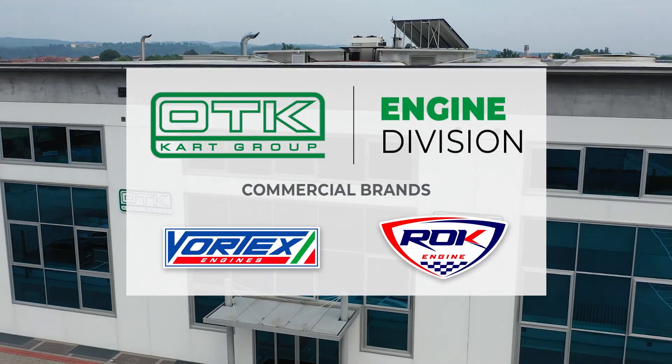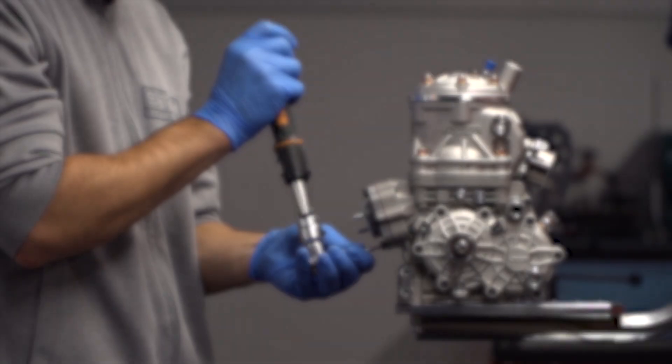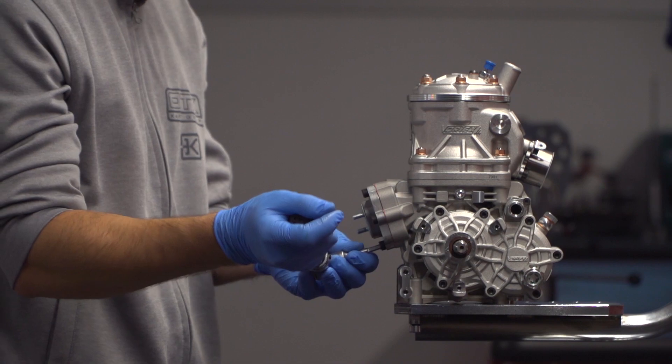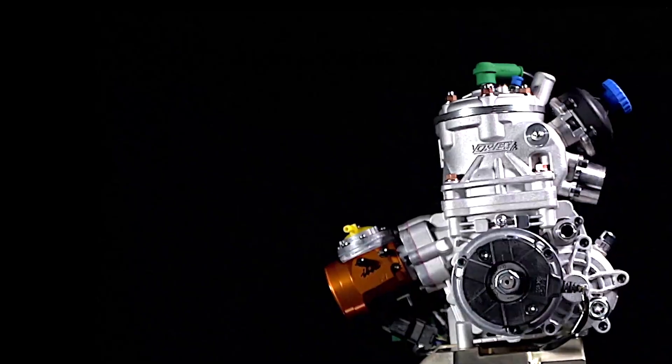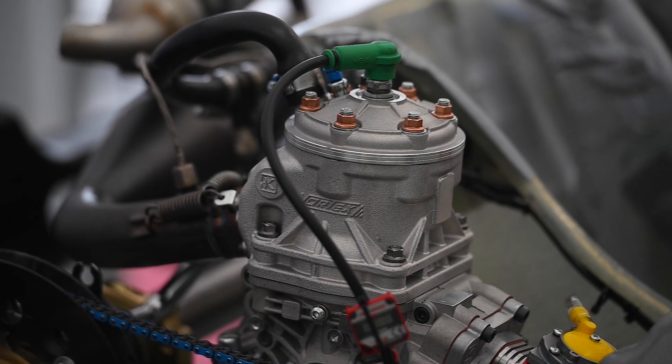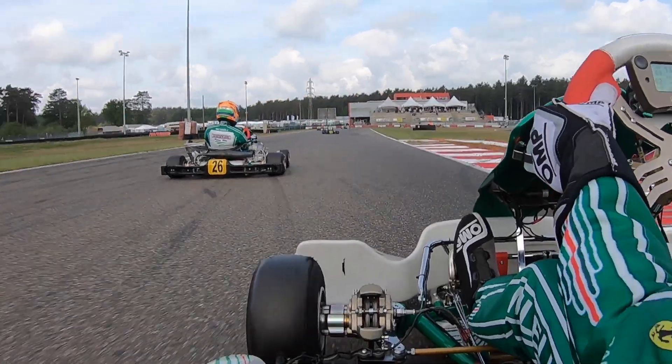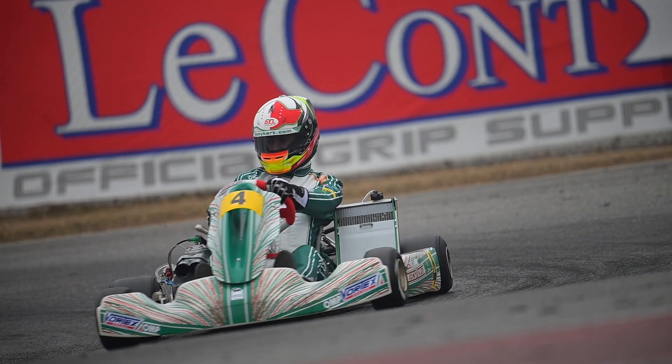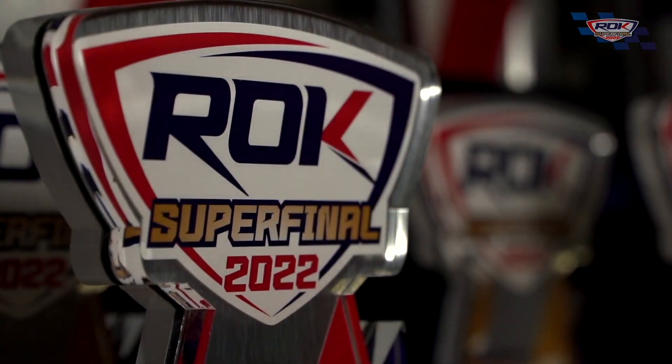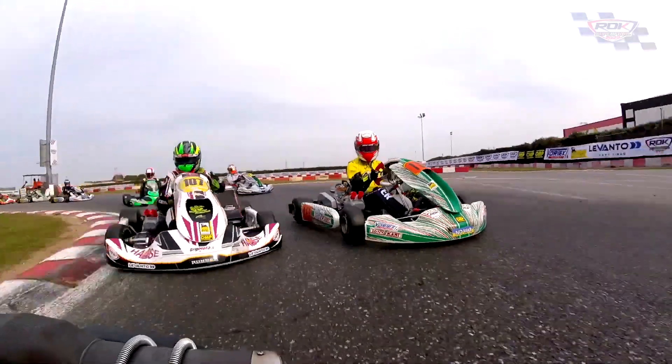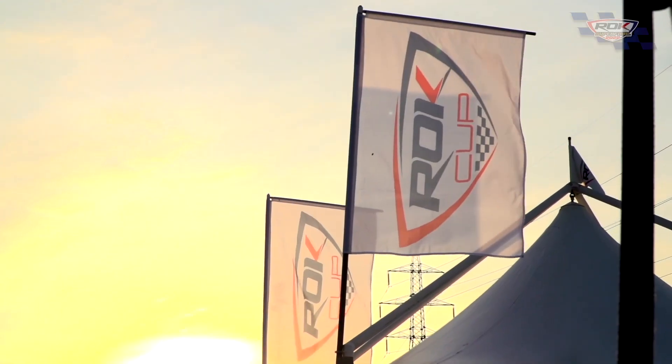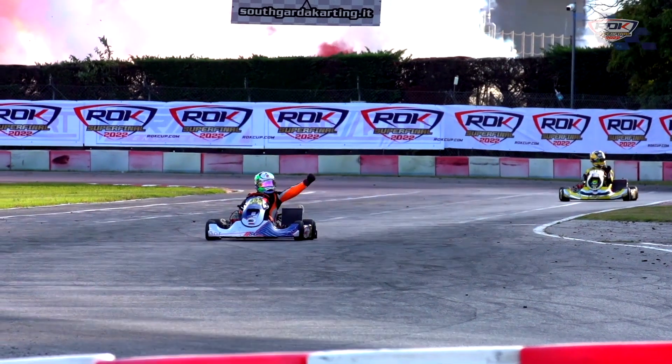Vortex, the engine division of the OTK Kart Group, produces two product lines: one under the Vortex Engines brand with CIK FIA homologation, reserved for international competitions, and one for the ROC Cup Single Brand Championship, created and promoted by Vortex itself in over 25 countries worldwide.